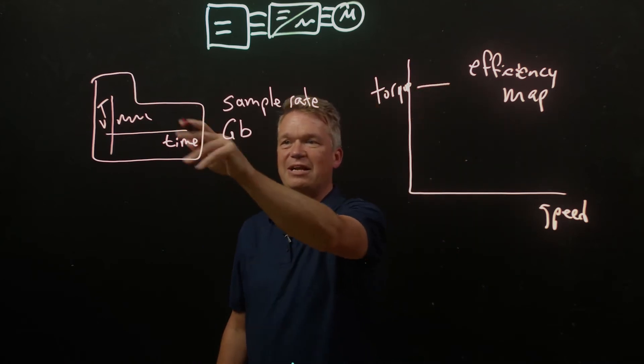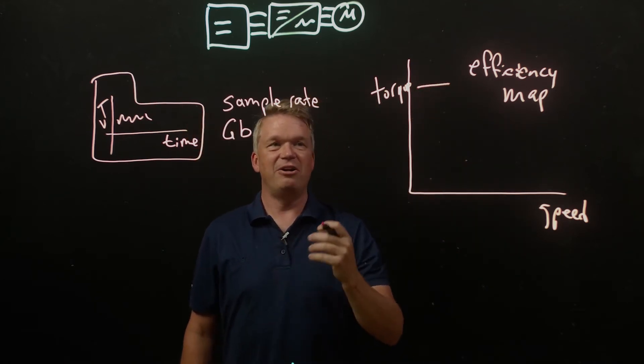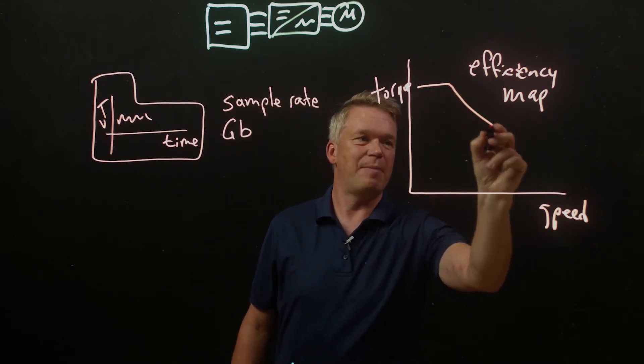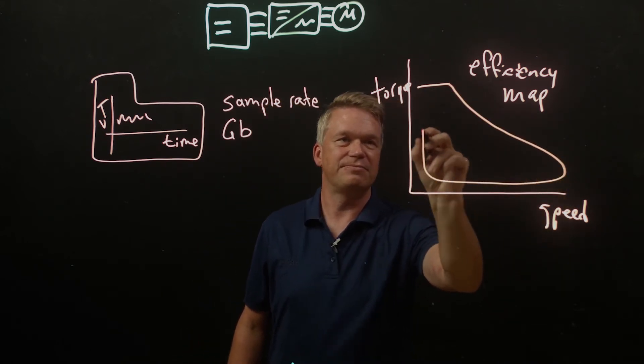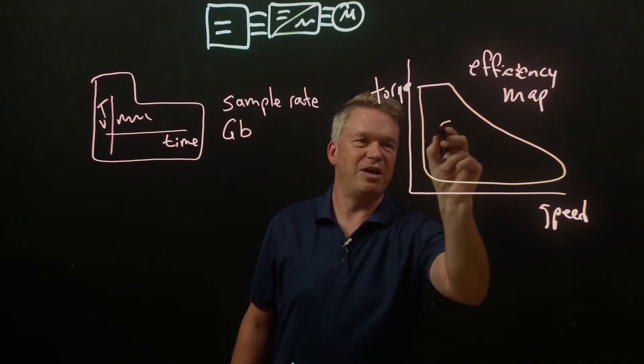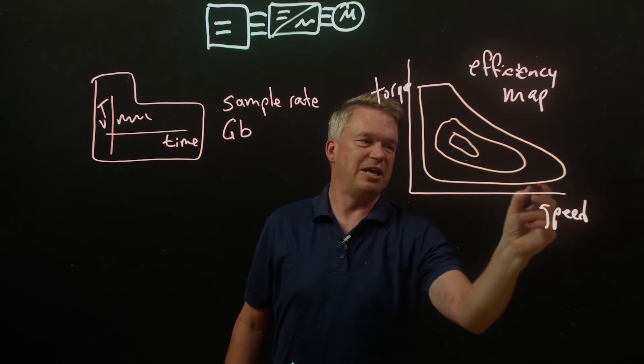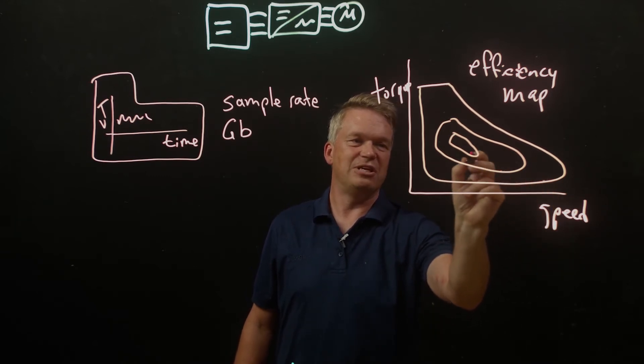And over time, if we collect enough of this time series data here at enough different unique conditions of torque and speed, we'll start to build up a map that maybe looks something like this. And further, we'll find that we have kind of shapes or islands in here of, say, lower efficiency, moderate efficiency, and high efficiency.